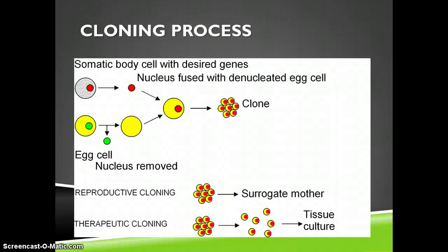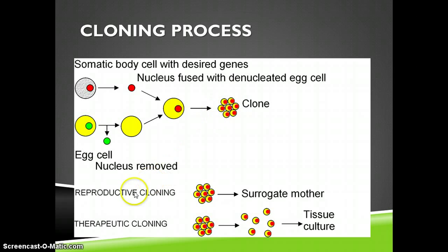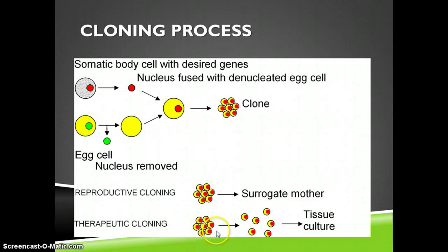To clone Dolly, scientists took a mammary gland body cell with the desired genes and an egg cell, removed the haploid nucleus from the egg cell and the diploid nucleus from the body cell, and fused the diploid nucleus into the enucleated egg cell, which then began dividing to produce an embryo — the clone. For reproductive cloning, that embryo is placed inside a surrogate mother. For therapeutic cloning, the embryonic cells are grown in tissue culture and treated to produce the desired outcome.